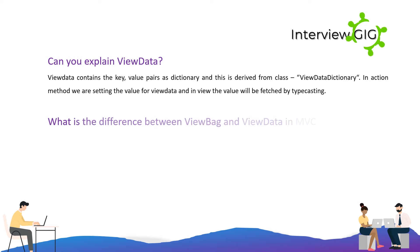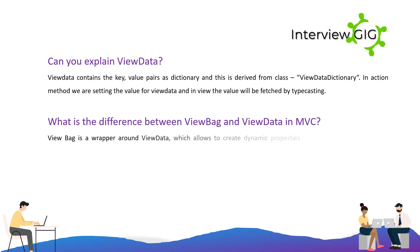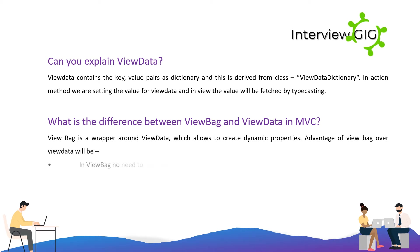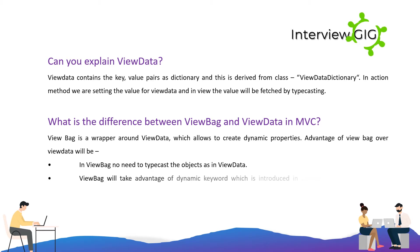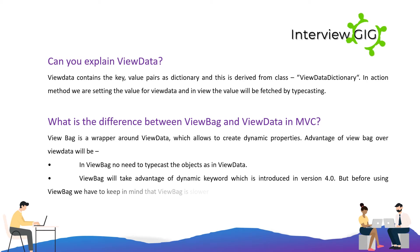What is the difference between ViewBag and ViewData in MVC? ViewBag is a wrapper around ViewData which allows you to create dynamic properties. The advantage of ViewBag over ViewData is that in ViewBag there is no need to typecast the objects as in ViewData. ViewBag takes advantage of the dynamic keyword introduced in .NET version 4.0.